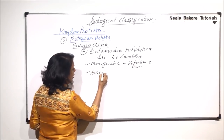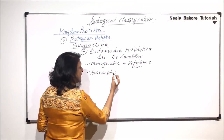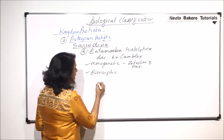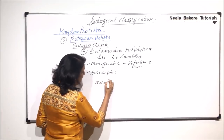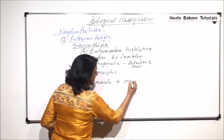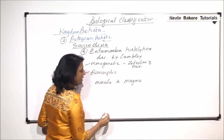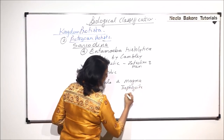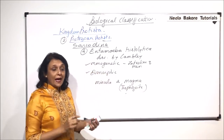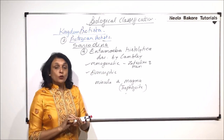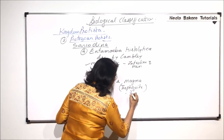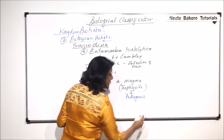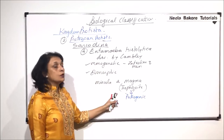Entamoeba histolytica is dimorphic, meaning it exists in two forms: minuta and magma. The magma form is also known as the trophozoite stage, and magma is the pathogenic stage — the stage that causes disease.